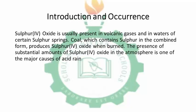SO2 is usually present in volcanic gases and in water of certain sulfur springs. Also, coal contains sulfur in combined form. When coal is being combusted, it produces SO2. The presence of substantial amounts of SO2 in the atmosphere is one of the major causes of acid rain, because when SO2 dissolves in water, it produces an acidic solution.